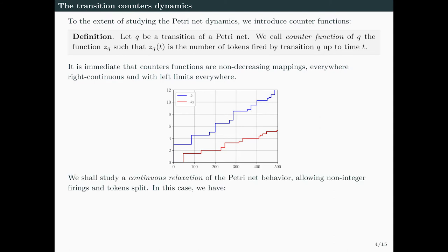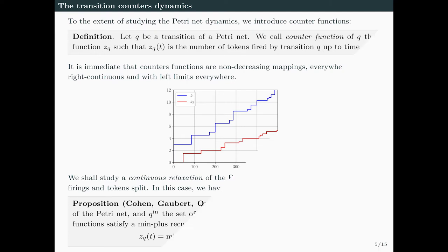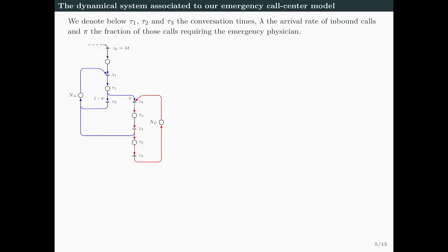We should mention that in this talk, we study a continuous relaxation of the Petri net behavior, allowing non-integer firings and token splits. The counter functions satisfy a min-plus recursive system with time delays of the form ZQ(T) is a minimum taken over the upstream places of Q of some CPQ plus ZQ' delayed by time τP. This CPQ term relates to the initial marking of place P, and αPQQ' relates to upstream transitions and their reaching proportions.